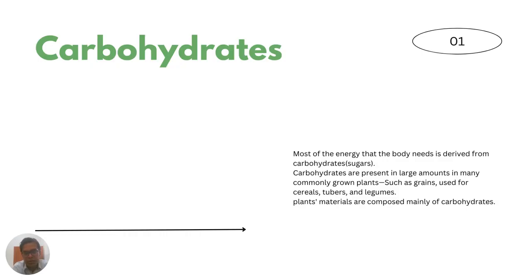Most of the energy that the body needs is derived from carbohydrates. Carbohydrates are present in large amounts in many commonly grown plants such as grains used for cereals, tubers and legumes. Plant materials are composed mainly of carbohydrates.